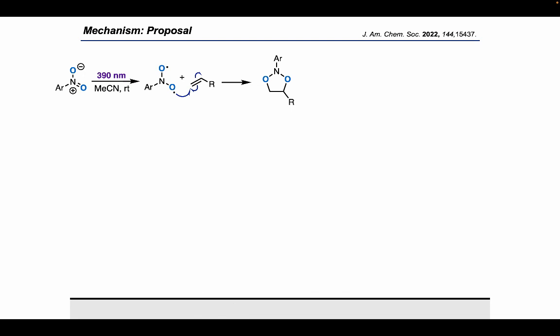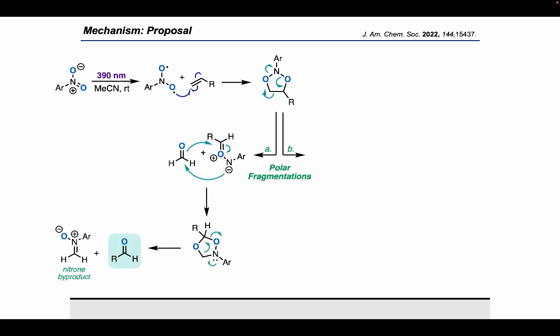Now putting all of our mechanistic data together in a complete proposal, we believe our reaction is occurring through photoexcitation of the nitroarene, which subsequently reacts with the alkene to produce the key dioxazolidine intermediate. The dioxazolidine then decomposes through a polar fragmentation pathway, which can go in either direction. If it went to the left, we would get this carbonyl imine and carbonyl, which then does a second cycloaddition event to give you a second dioxazolidine species that then fragments to give your carbonyl product and a nitrone byproduct. And if it fragmented the other direction, it would be exactly the same, except the opposite carbonyl product and nitrone.